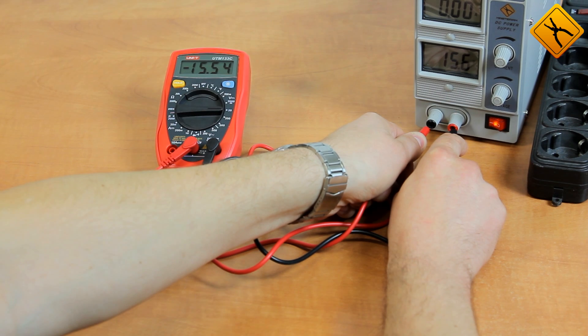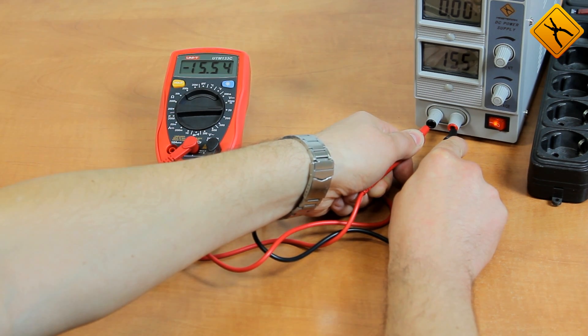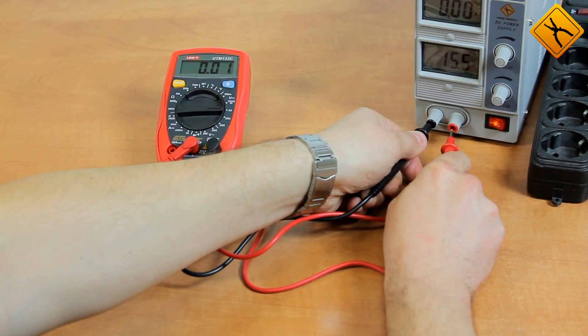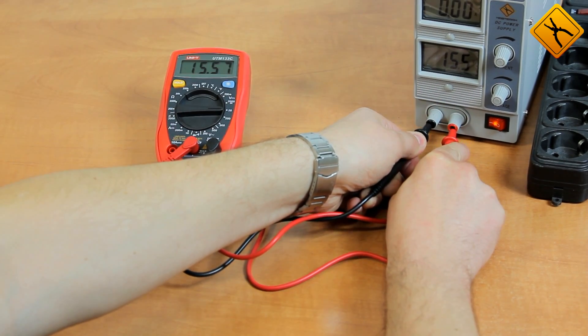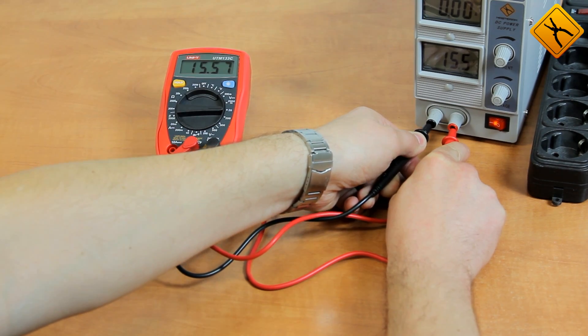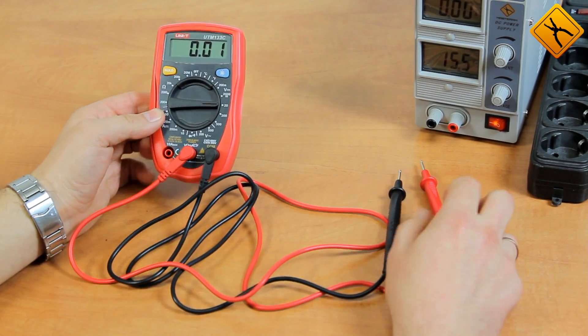Note the minus sign on the screen. It indicates the wrong polarity. I change the probes and the minus disappears. This is very convenient, because in the analog devices the indicator moves in the opposite direction and you need to quickly change the polarity.